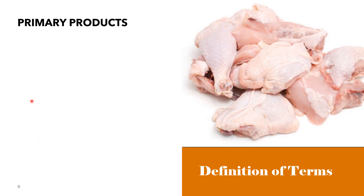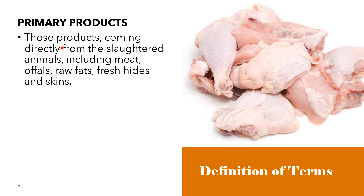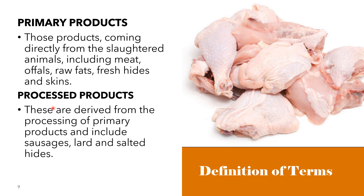Livestock products from slaughtered animals are termed primary products — those coming directly from slaughtered animals, including meat, offals, raw fats, fresh hides, and skins. Processed products are derived from the processing of primary products and include sausages, lard, and salted hides.